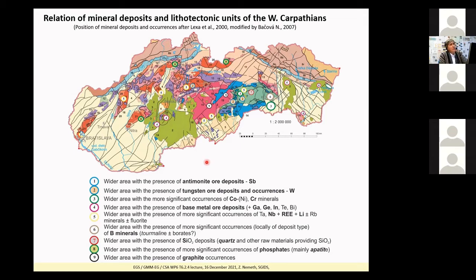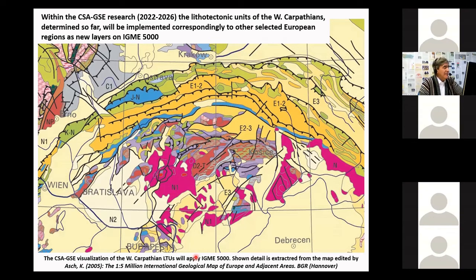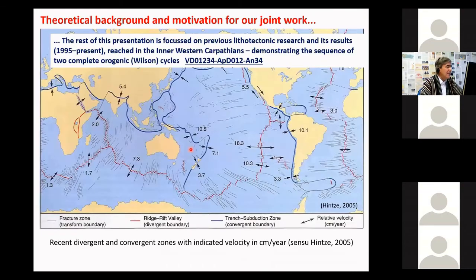Lithotectonic units can be attributed to various kinds of mineralizations — for example, basin opening and genesis of oceanic space brings well-known stratiform mineralizations. Our research within Europe may reveal further territories where such mineralization can be prospective. With D2 — the metamorphic complex and overheating of collided lithology — vein mineralizations originate. Many of these are critical materials, so I think our work is very useful for the European Union and I hope the European Commission will appreciate it given current activities concerning critical raw materials. This segment of IGME 5000 is at scale 1:5 million.